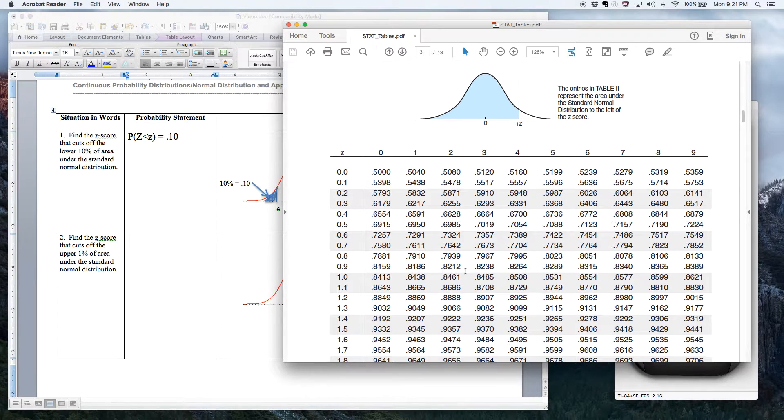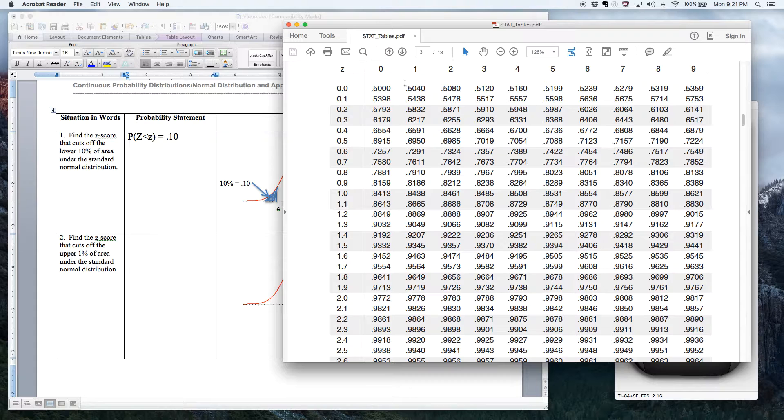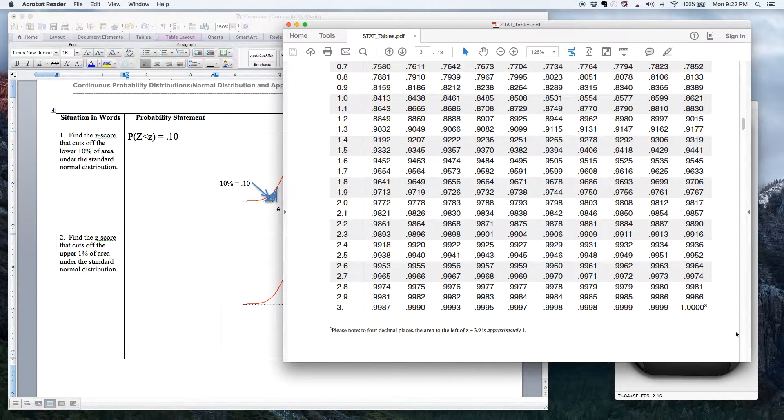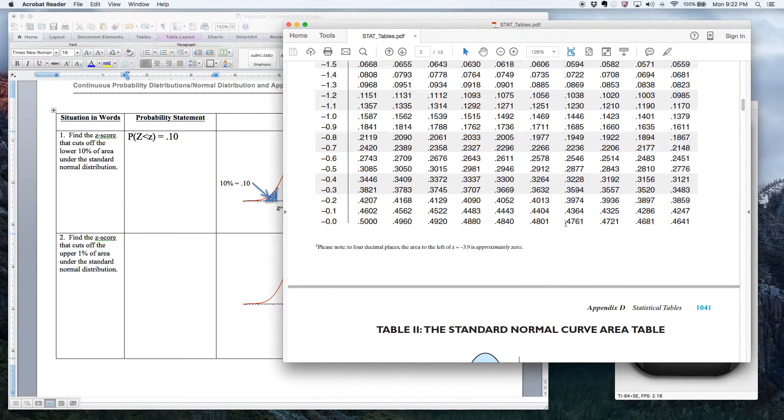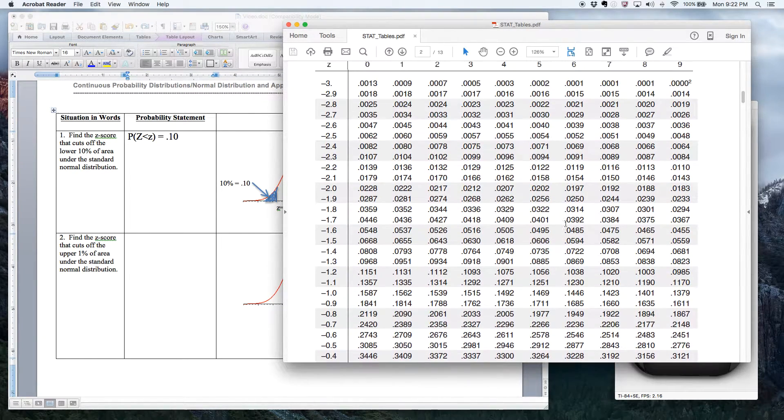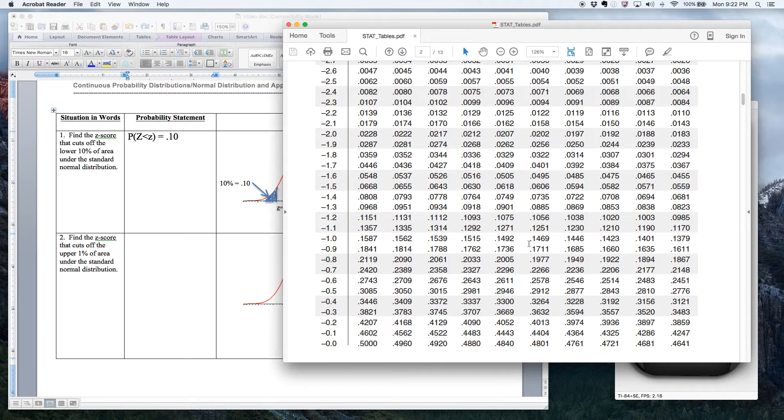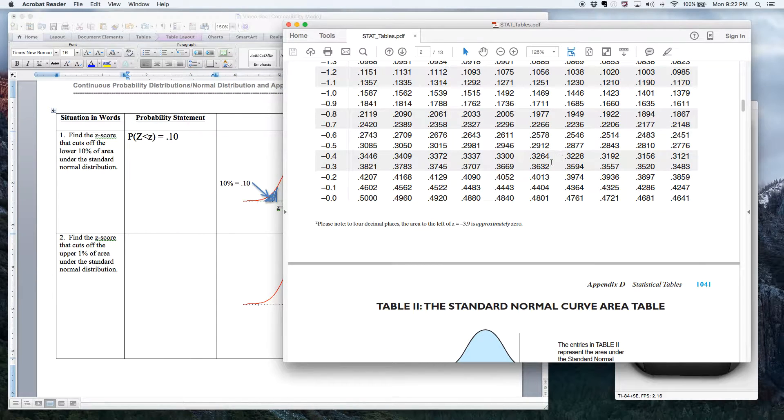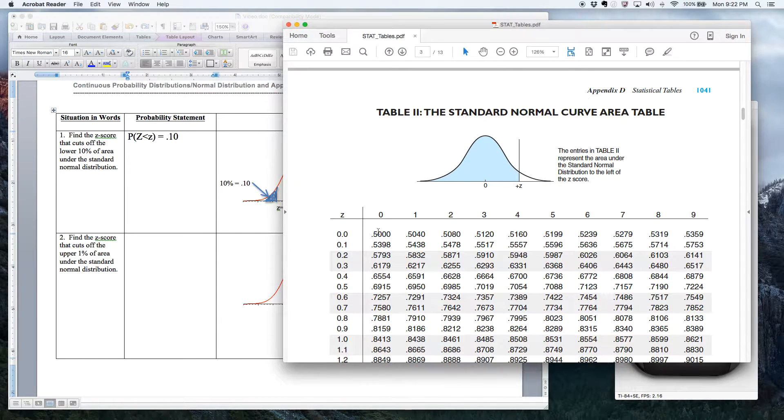So when you go to your tables, you don't want to be in this table. This is the positive z-score table. These probabilities, as you can see, the lowest one is 50%, right? And the highest one is 100%. So you have to go to the first part of the table that has the negative z-scores in it. All right, and the lowest one here you can see is essentially 0.1% up to about 0.46. Here's a half down here, right?